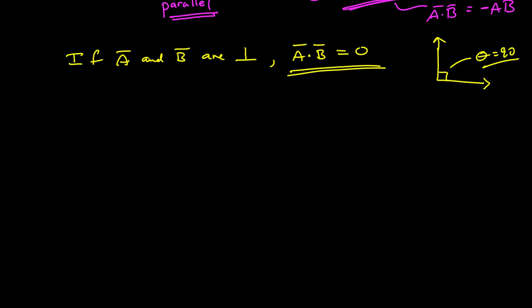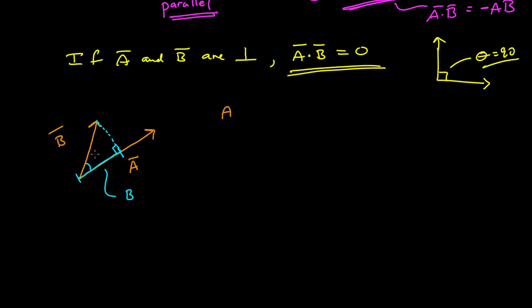Another way to look at the dot product is to consider the projection of one vector upon another. Let's say this is vector a and this is vector b, translated so they're tail to tail. If I look at the magnitude of a times the projection of b on a: projection means I take b, go to the tip of b, draw a line to a such that it makes a right angle. The projection of b on a is the length of that line segment, which is the magnitude of b times the cosine of the angle between a and b. So a multiplied by the projection of b on a is ab cosine theta — which is the dot product. It's telling you the degree to which two vectors are aligned.